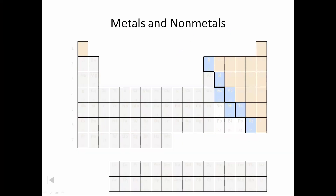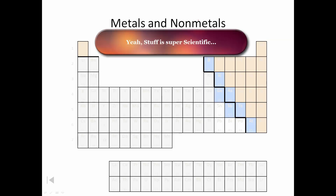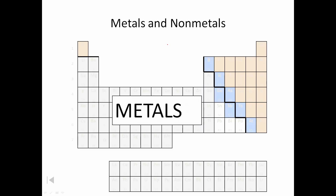If you look at your periodic table, we've really got three huge groups of stuff. You have your metals — everything marked here in white. Most of the periodic table is metals. Over here in pale yellow, you have your non-metals, generally to the right of this blue staircase, except for hydrogen, which hangs out on its own over in group one — not because it's a metal, but because it has similar reactivity traits.